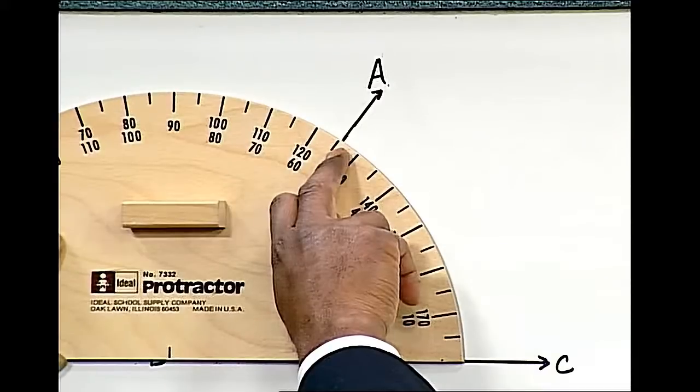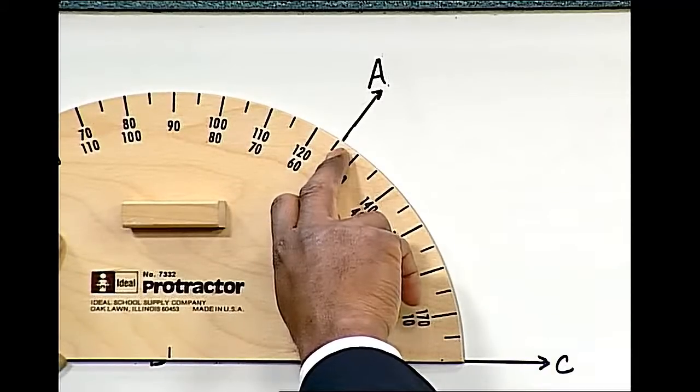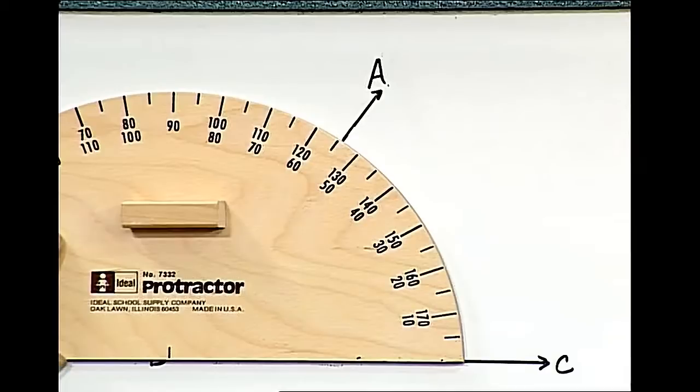So therefore, the measurement of angle ABC is equal to 55 degrees.